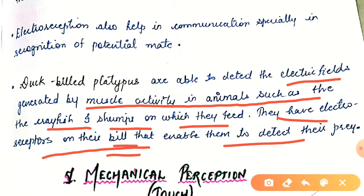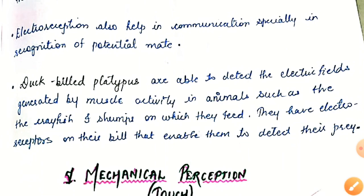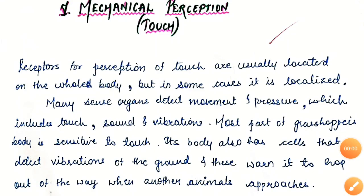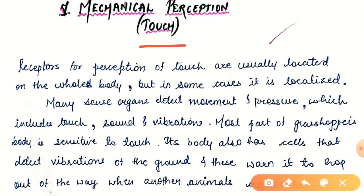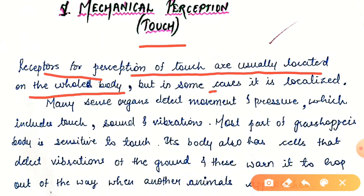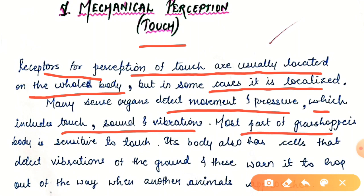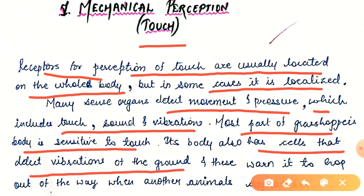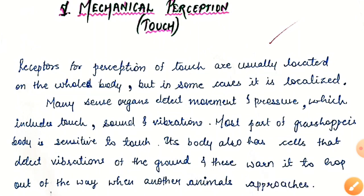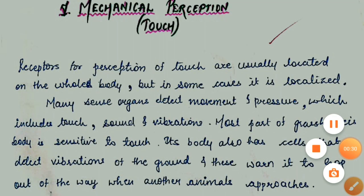The last perception in our topic is mechanical perception, also known as touch perception. Receptors for touch are usually located on the whole body but in some cases are localized. Many sense organs detect movement and pressure, which includes touch, sound, and vibrations. Most of the grasshopper's body is sensitive to touch; its body also has cells that detect vibrations of the ground, which cause it to hop out of the way when another animal approaches.